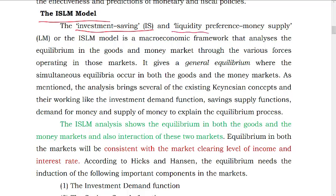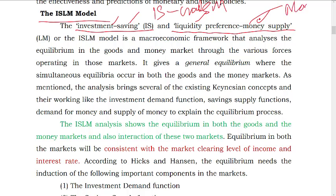Now, liquidity preference is money supply. What is IS? What is LM? We can integrate this model. One IS is the goods market. One LM is the money market. We can integrate this model.